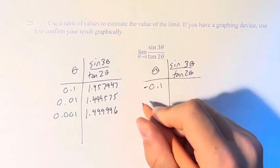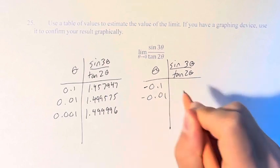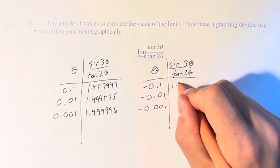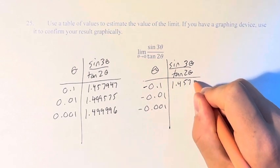so negative 0.1, negative 0.01, negative 0.001, we get similar values, 1.457847.